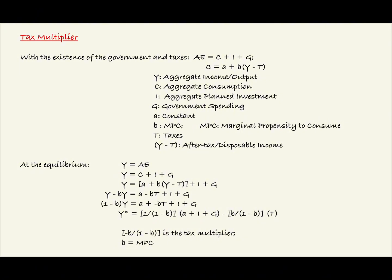Now this factor of the negative B over 1 minus B is the tax multiplier, where B equals the MPC, or marginal propensity to consume.